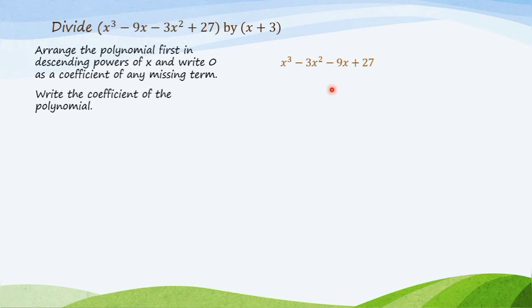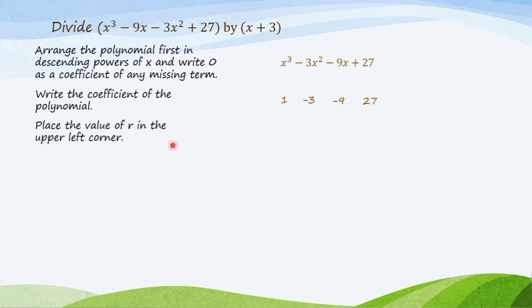Then write the coefficients of the polynomial. So we have 1, negative 3, negative 9, and 27. Then place the value of r in the upper left corner. To get the value of r, the divisor is x minus r equals x plus 3, so r equals negative 3.